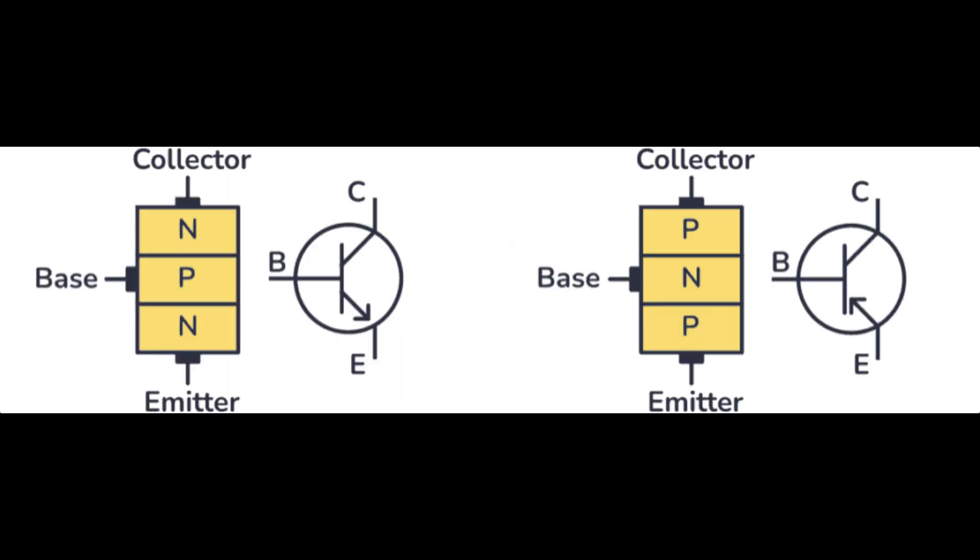As you can see in the diagram, BJTs consist of three differently doped semiconductor regions: the emitter region, the base region, and the collector region. These regions are respectively P-type, N-type, P-type in a PNP, and N-type, P-type, N-type in an NPN.